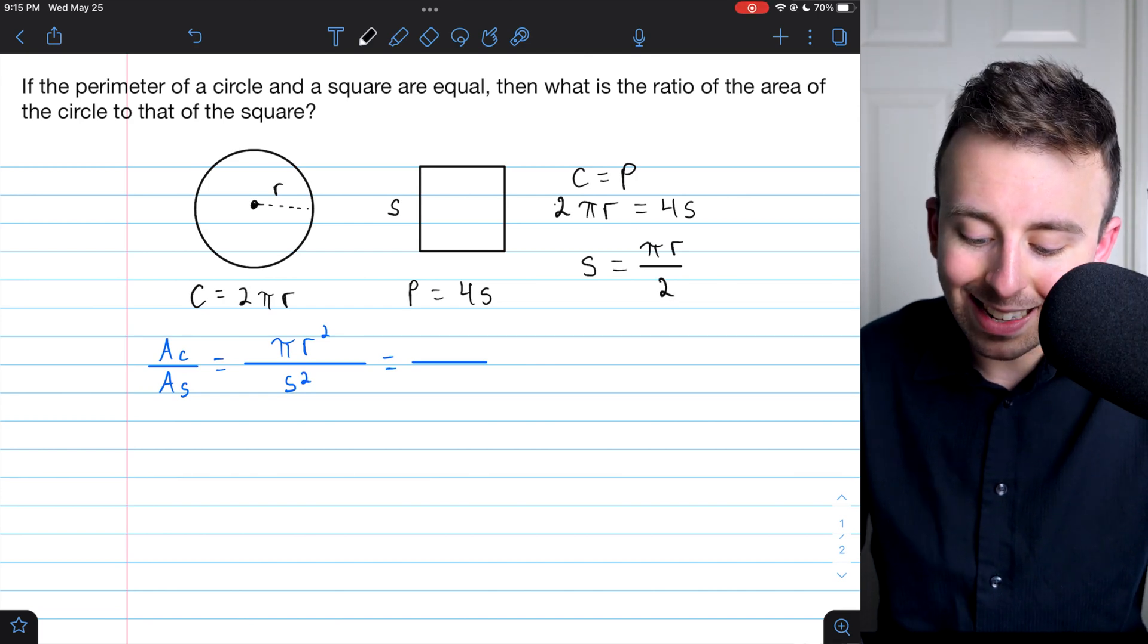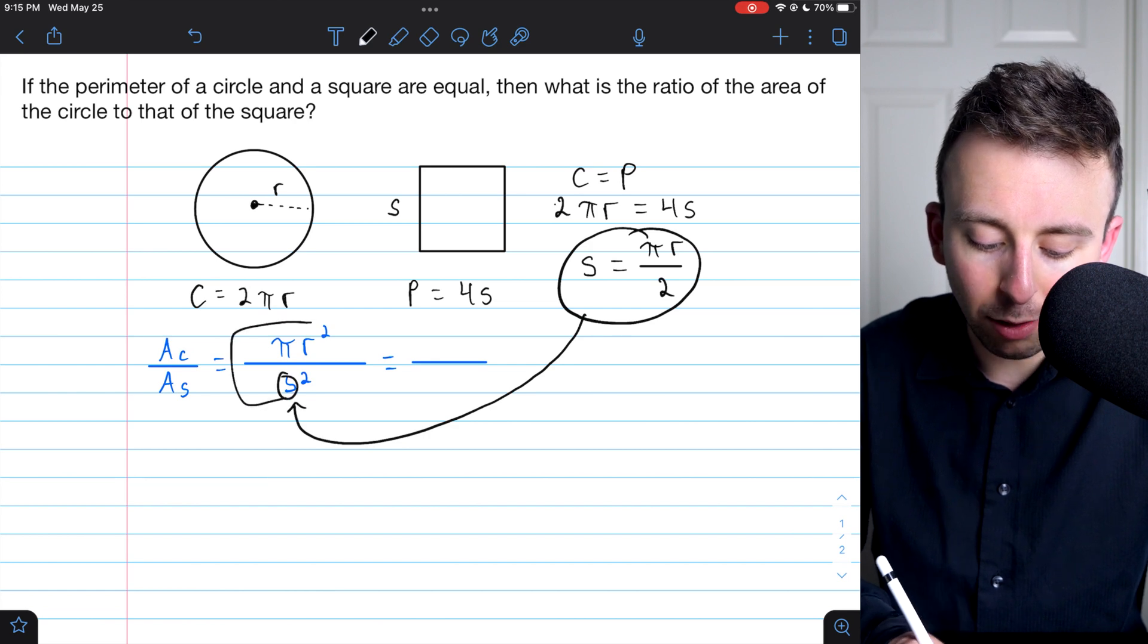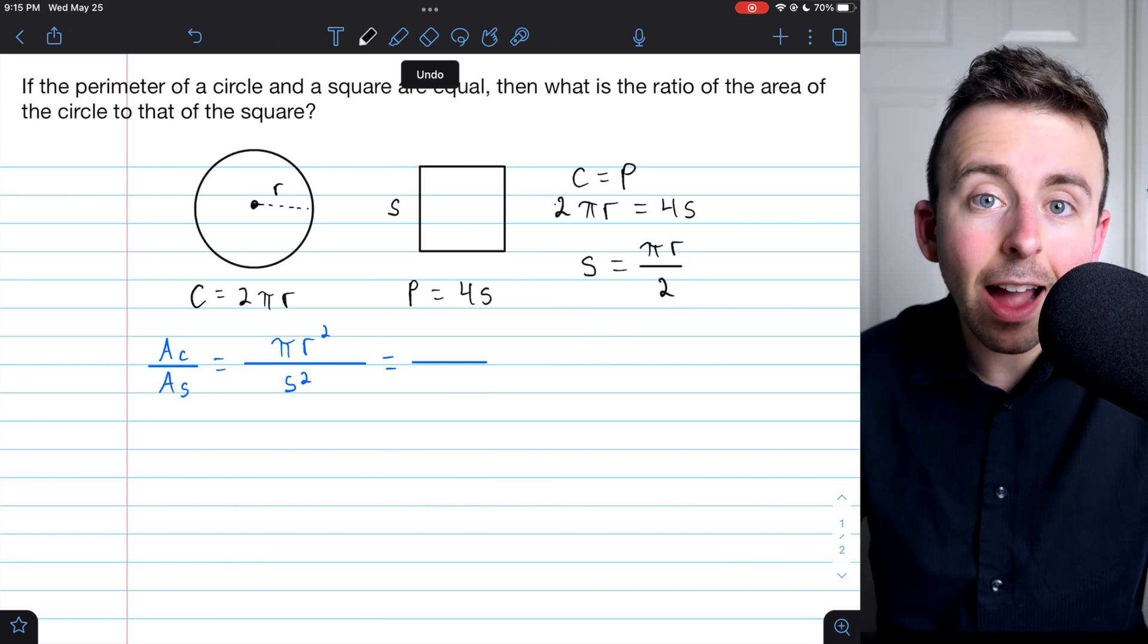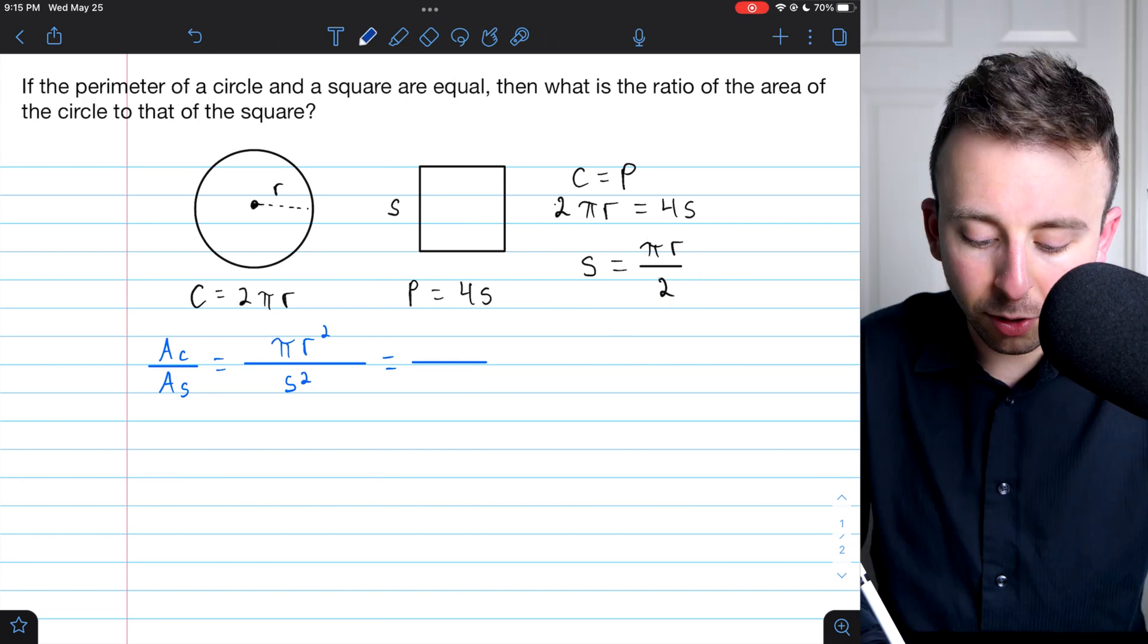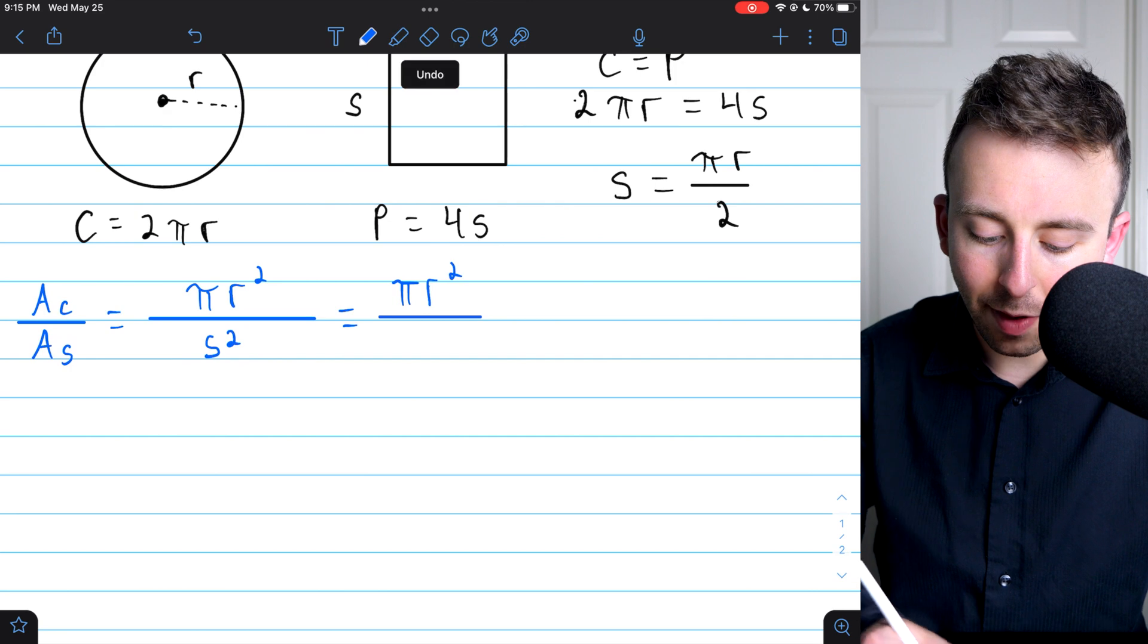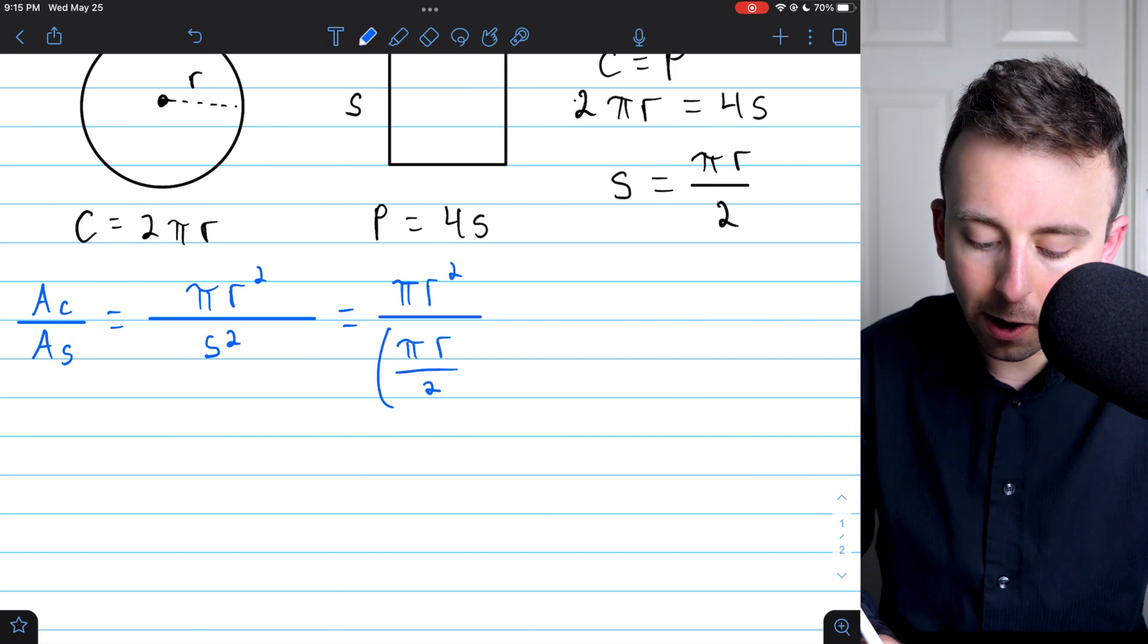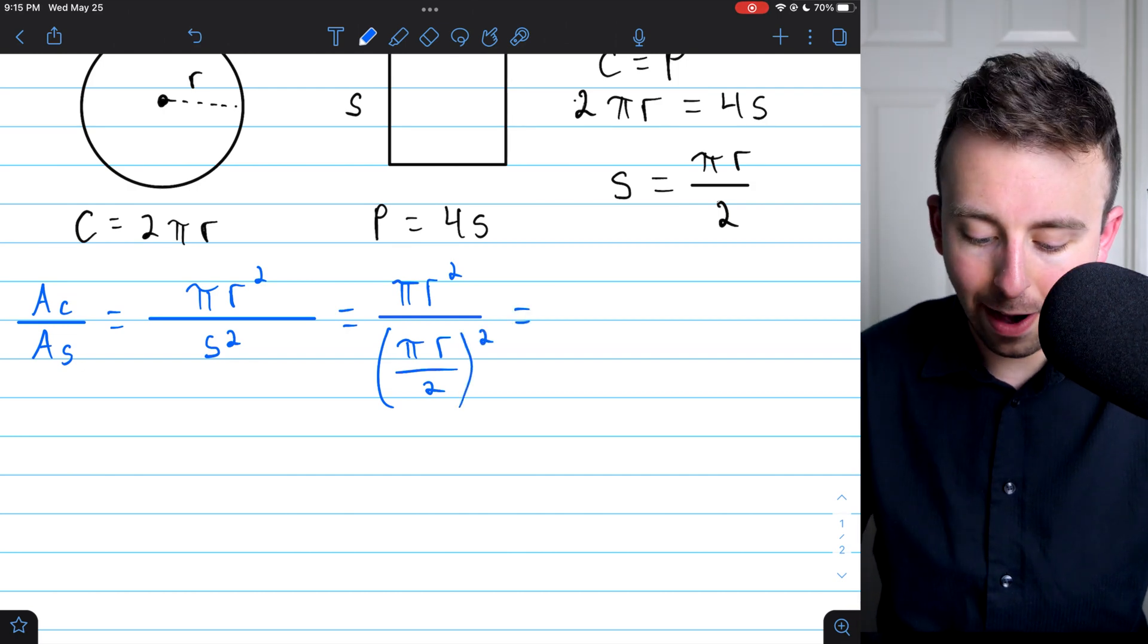Now, we can take this and put it in place for s in this ratio. That way, we'll have a ratio entirely in terms of r, which can then be simplified. So in the numerator, we still have πr squared. In the denominator, we have s squared, but s is being replaced with πr divided by 2, and of course, that's getting squared.